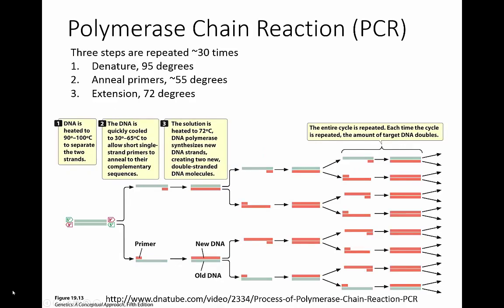Polymerase chain reaction works by performing three different steps sequentially and then repeating those three steps over and over, about 30 times total. The very first step is a denaturation step. You start with double-stranded DNA and heat it to about 95 degrees Celsius, which separates the two strands by breaking the hydrogen bonds that form between the bases.